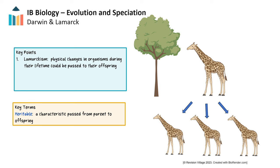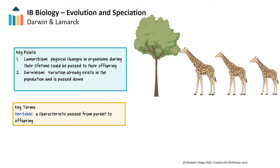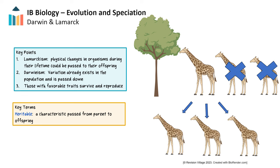Darwin suggested that variation has to already exist in the population and would be passed down from parent to offspring. Longer-necked giraffes survive more often to reproduce and have offspring with longer necks. Discovery after discovery — from genetics to DNA to physiology — would later support Darwin's theory of evolution.